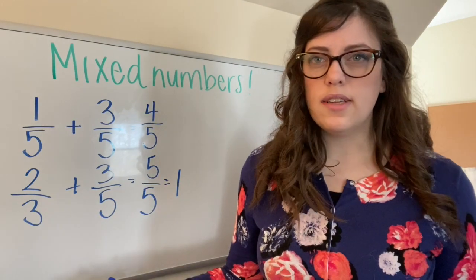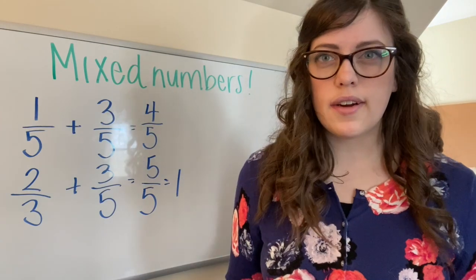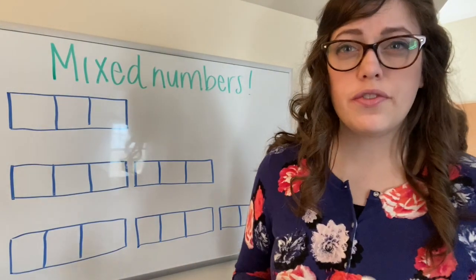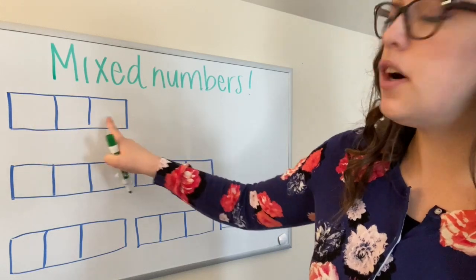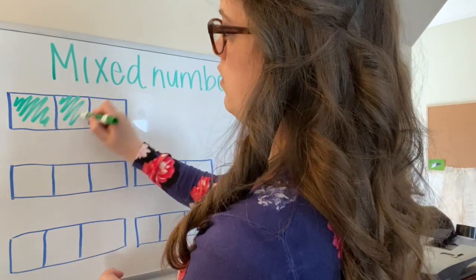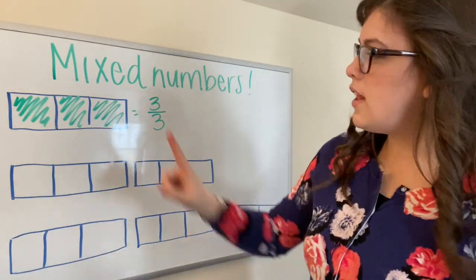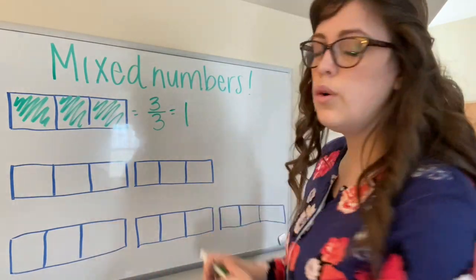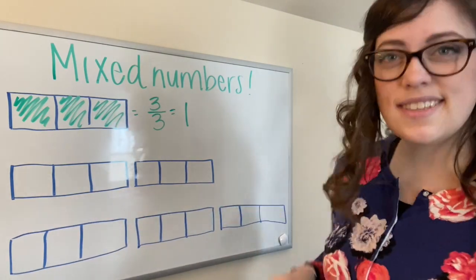Now what happens when our number becomes greater than one whole? That's where mixed numbers come in. Now I'm going to show you a few examples here. We know from what we learned yesterday that if I have a bar here that's split into thirds, if I have three thirds, then I have one whole. I've colored in one whole, but what would happen if I had six thirds?